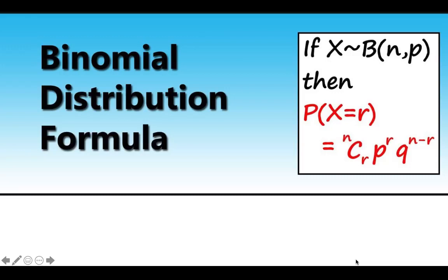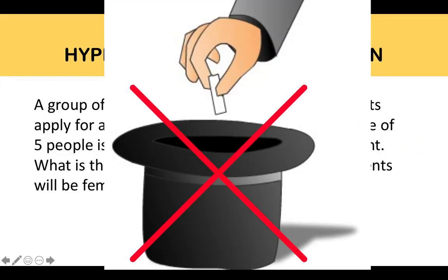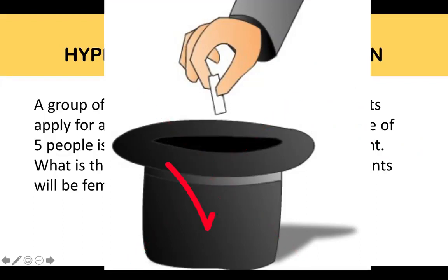The only difference is that in the hypergeometric distribution, we are sampling without replacement, whereas in the binomial distribution, we are sampling with replacement.